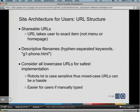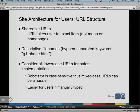For URL structure, shareable URLs are always good — you can give a URL to a friend by email and they find the exact same item. Descriptive file names help users and search engines, with keywords separated by hyphens, like 'g1-phone.' Use lowercase URLs for the safest implementation — it's easier if users manually type into a browser. Also, keep in mind that robots.txt is case sensitive, so it's harder to handle combinations with mixed case.